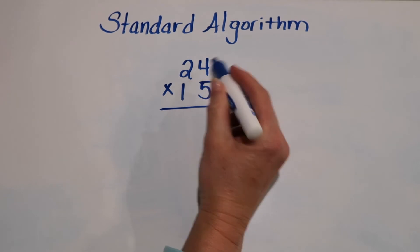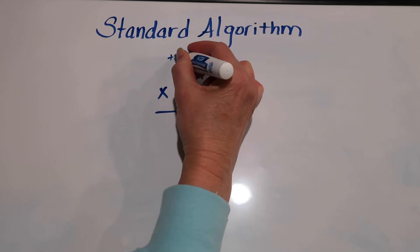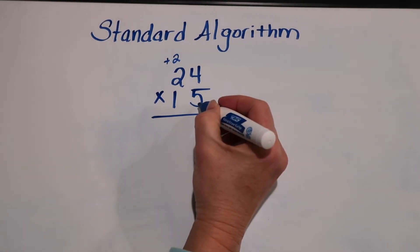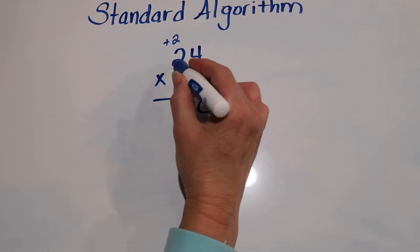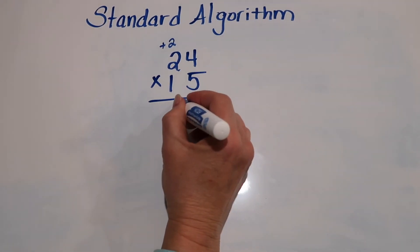So starting in the ones column, we're going to go 5 times 4, which is 20, drop the 0, carry over the 2. We're going to stay with the 5. Now we're going to go 5 times 2, which is 10, plus 2, which is 12.